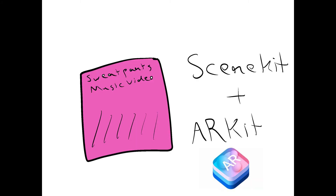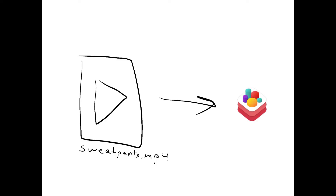The final step was to use SceneKit to play the video. SceneKit is an engine that runs on iOS to display different 3D assets. In this case, the 3D asset is a plane and the texture of the plane is the music video. I took out the first 30 seconds of the video and passed it into SceneKit to be triggered to play when the album cover is in the camera's view.